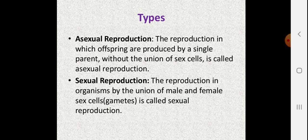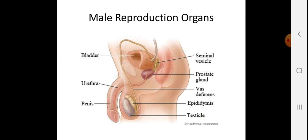This is the male reproductive system. In examinations, labeling diagrams is commonly asked. The major male reproductive organs are: seminal vesicle, prostate gland, vas deferens, epididymis, testicles, penis, urethra, and bladder.